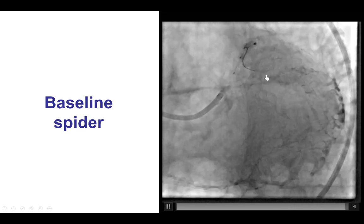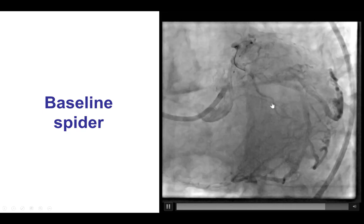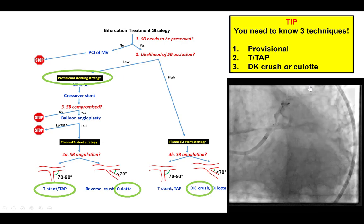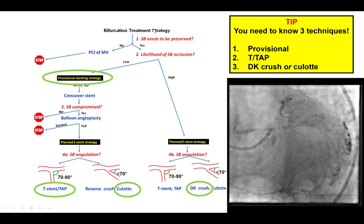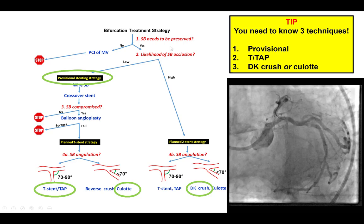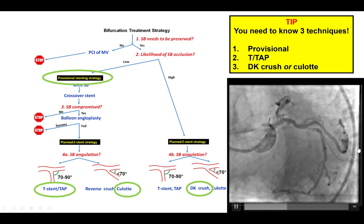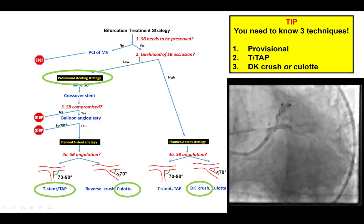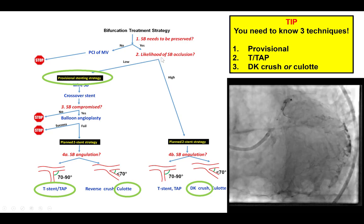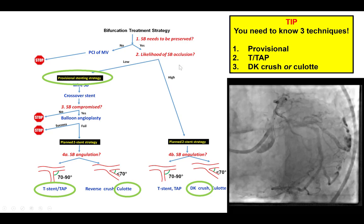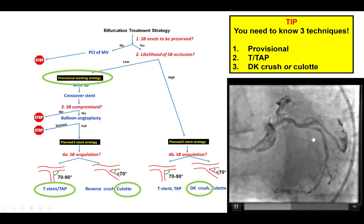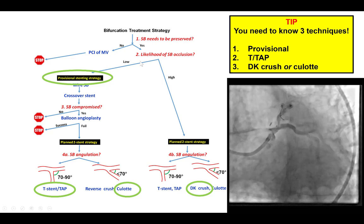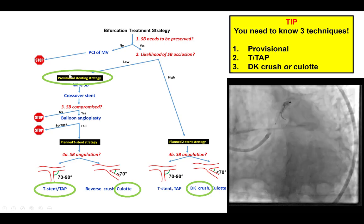The target lesion was a Medina 010 bifurcation of the circumflex and the obtuse marginal branch. Looking at the bifurcation treatment algorithm, the first question is whether the side branch — the OM in this case — needs to be preserved. Clearly this is a very large vessel and needs to be preserved. The second question is the likelihood of occluding the side branch, which in this case seems to be low, as there is no significant disease at the ostium of the side branch. So a provisional stenting strategy is preferred.